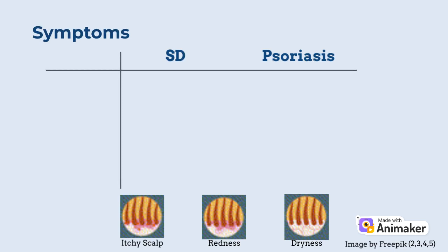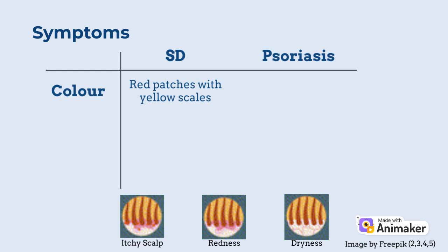While SD and psoriasis have similar physical characteristics, there are some characteristics that can help differentiate the two. So let's start with the symptoms. SD is generally characterized by red patches with yellow scales on the skin. However, it may present differently on different skin tones. For example, patients with darker skin may experience hypopigmentation or hyperpigmentation. Some people may also lack redness, while others have minimal scaling.